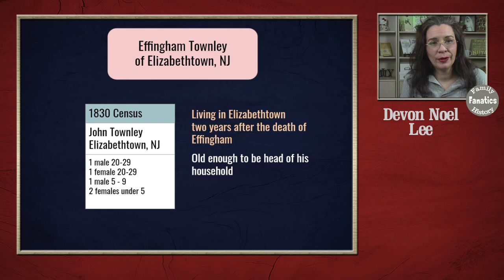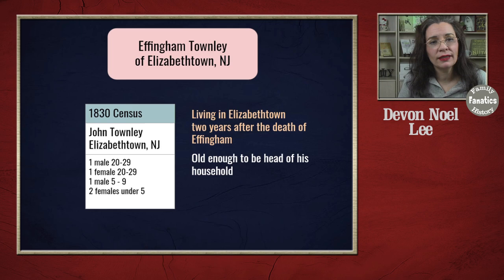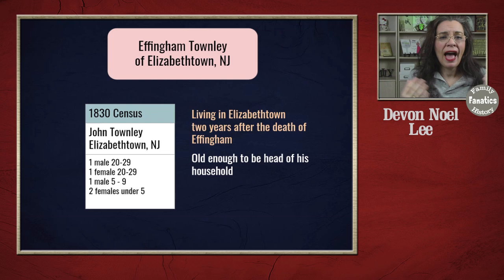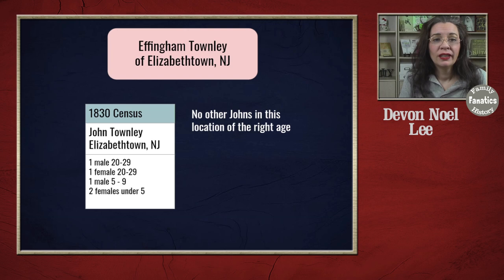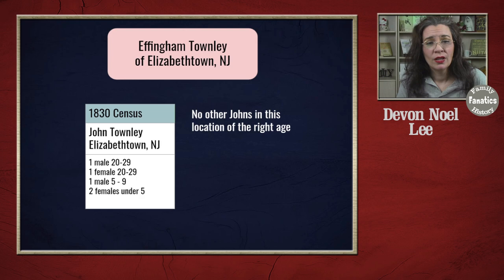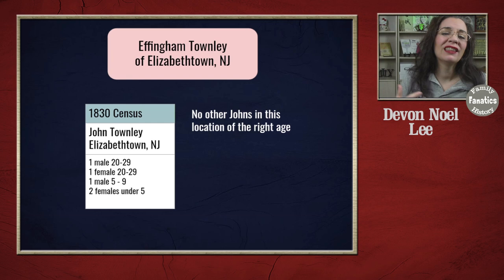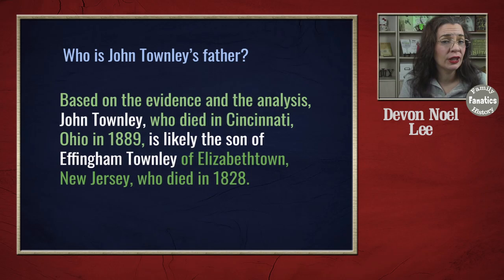John is old enough to be the head of household on the 1830 and 1840 census records, so we do need to leave the possibility that he is actually hiding under somebody else's name. However, in this census record we have a John Townley in the right place who hasn't been connected to any other ancestors. Could he be the son of Effingham? Most likely, because there's no other John in this location according to these records. John could be really impoverished and not have records made about him — in that case, you have to leave 'likely' in place. Feel free in the comments to tell me what you would have done differently or if you think this is a good theory.